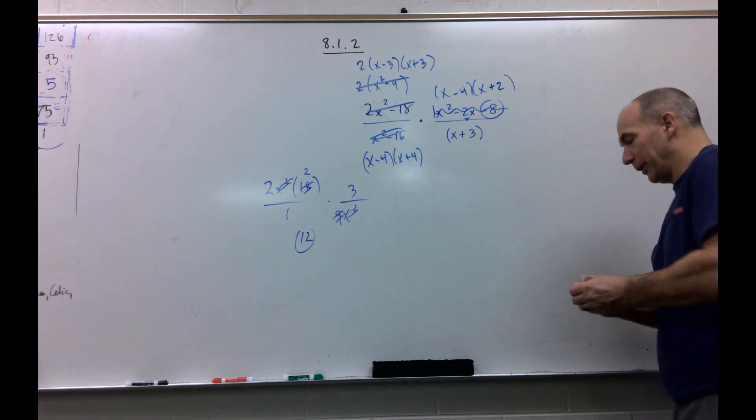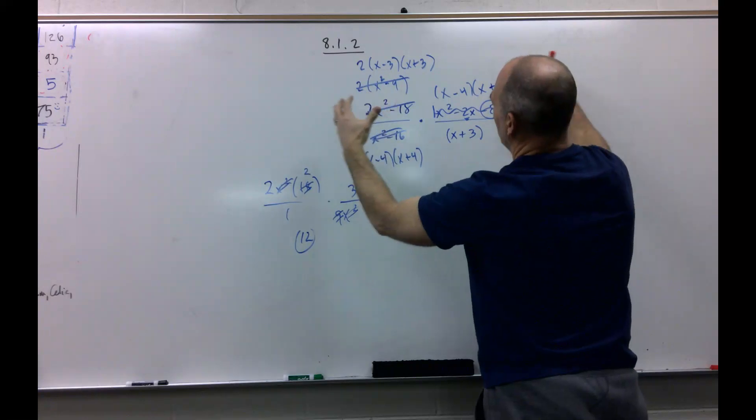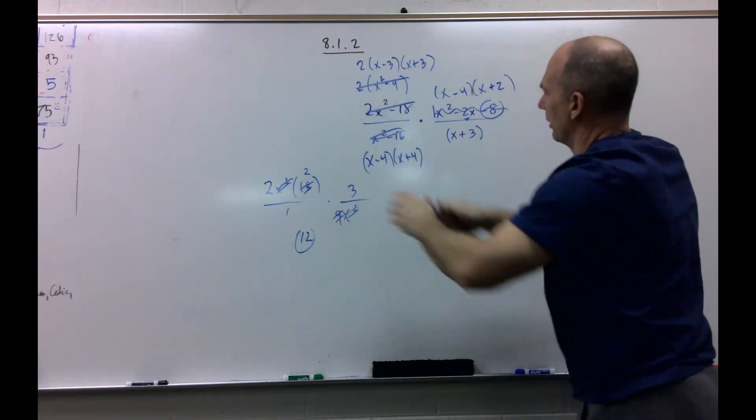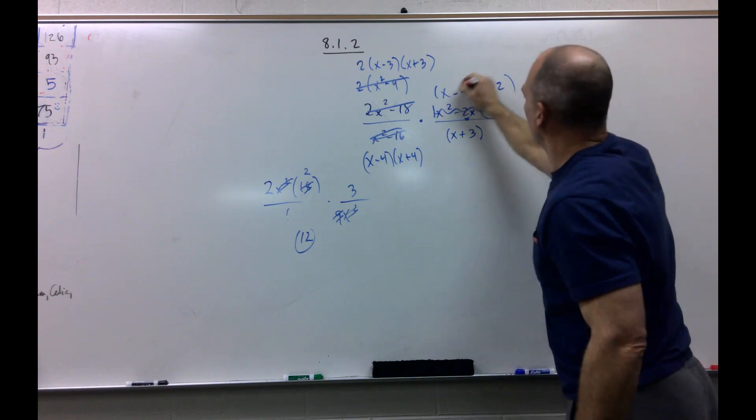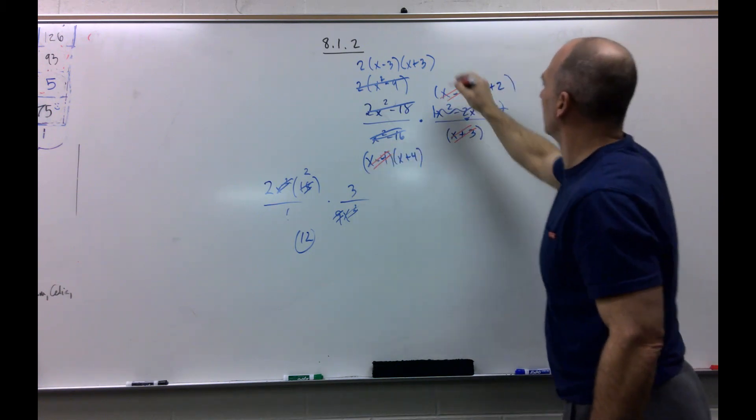So there's the factoring process. Why do we even do that? Because now everything is connected by multiplication just like this one was. So now we can start canceling. So here's an x minus 4, here's an x minus 4. Here's an x plus 3, x plus 3, and that's it.